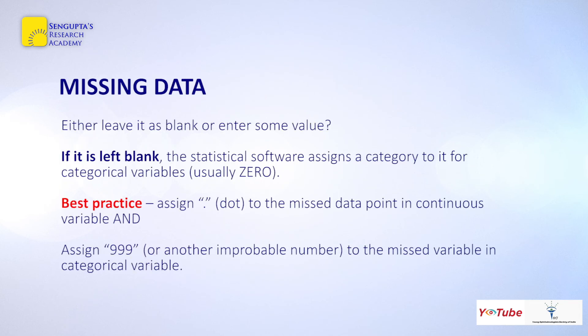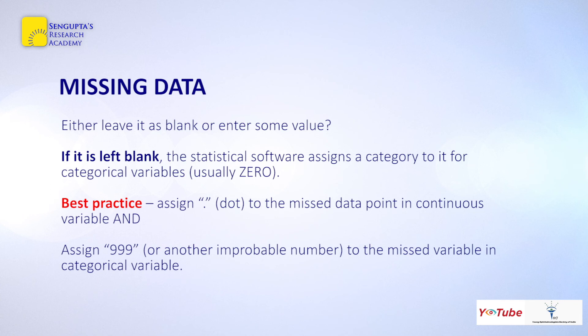For missing data, do not leave cells completely blank, because statistical software may arbitrarily assign a value — for example, assigning a blank categorical variable to zero. The best practice is to assign a dot to missed data points in a continuous variable, and assign an improbable number like 999 to missing values in a categorical variable. Clearly communicate this to your statistician when sending the Excel sheet.